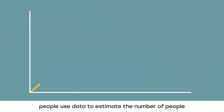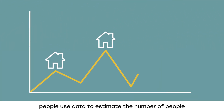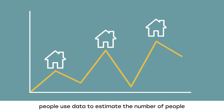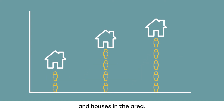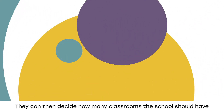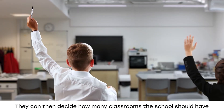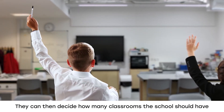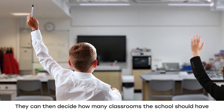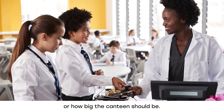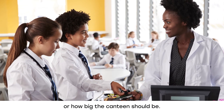people use data to estimate the number of people moving into the area and the number of children and houses in the area. They can then decide how many classrooms the school should have or how big the canteen should be.